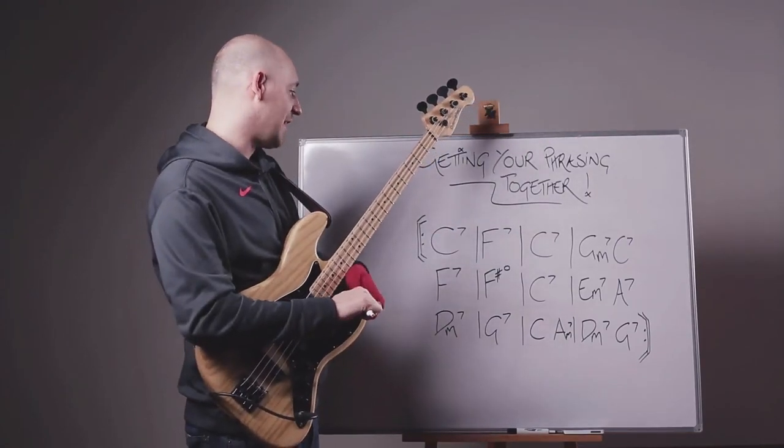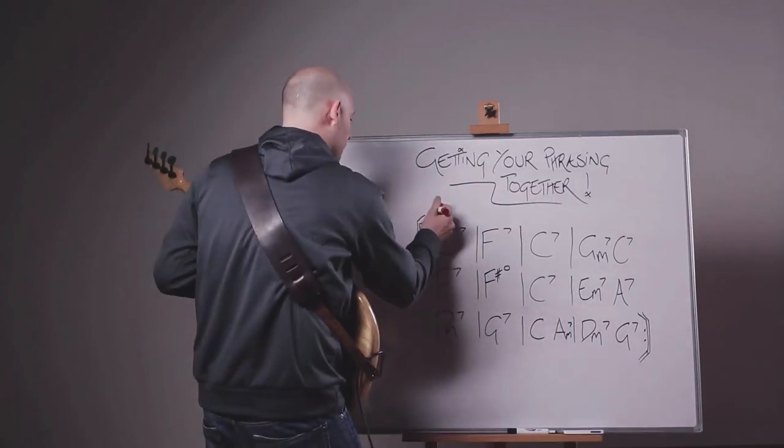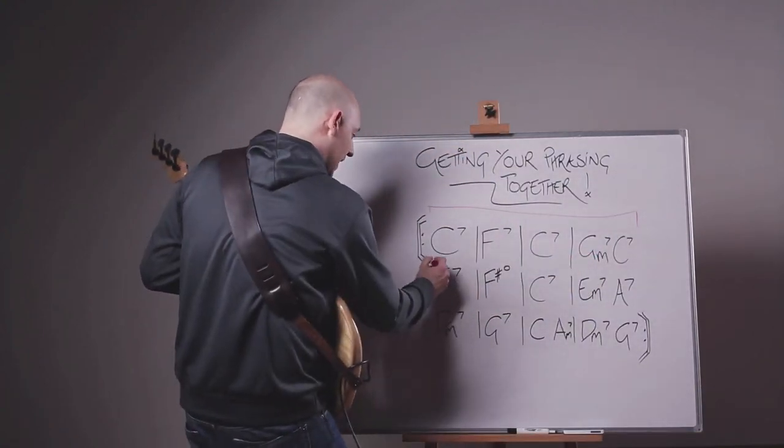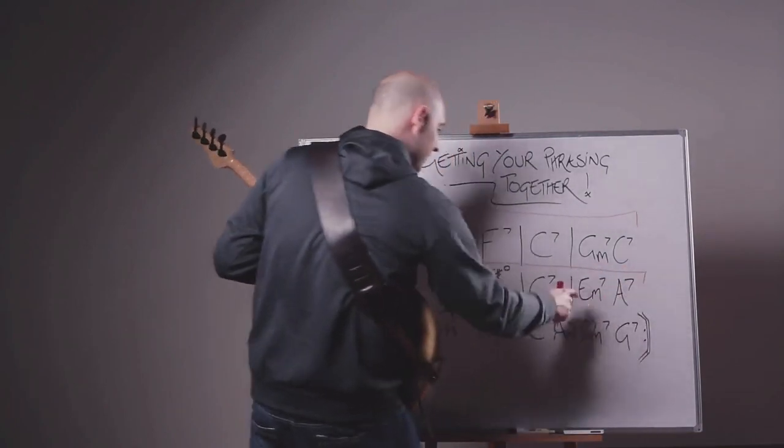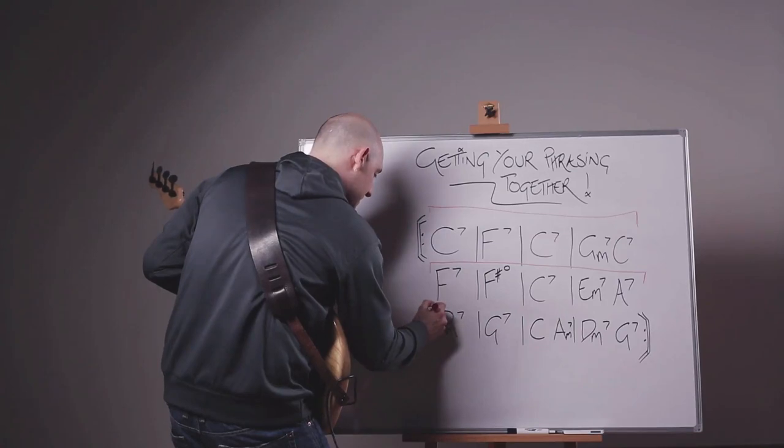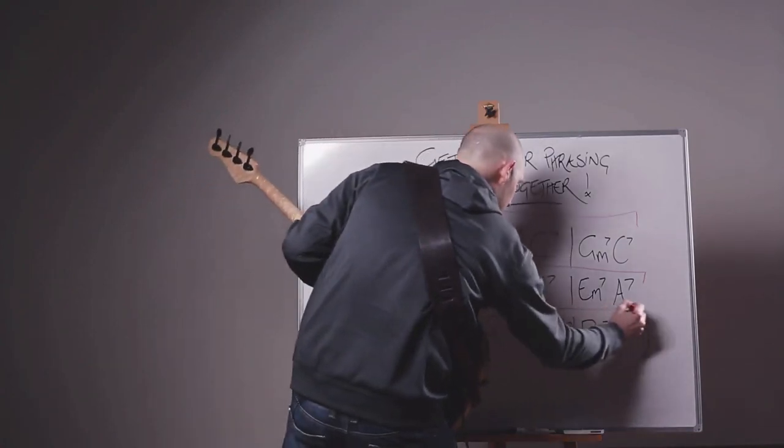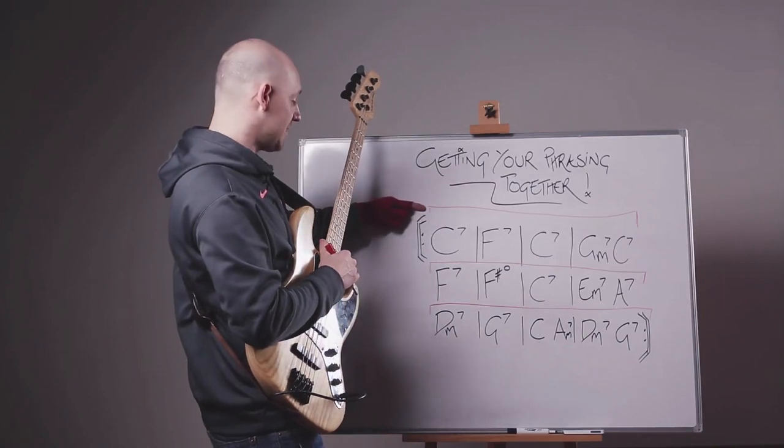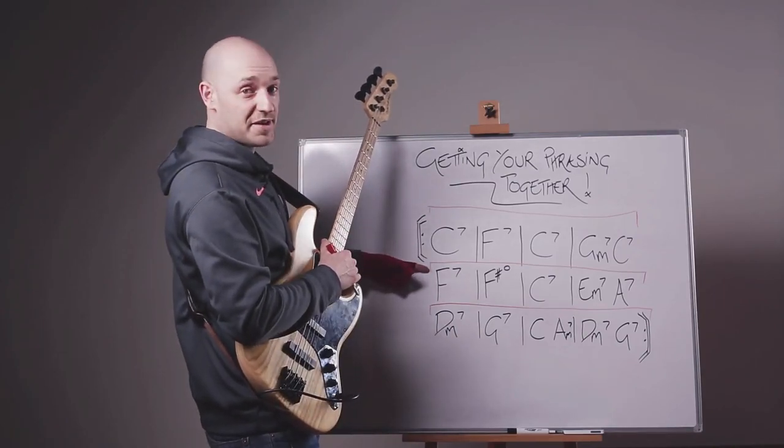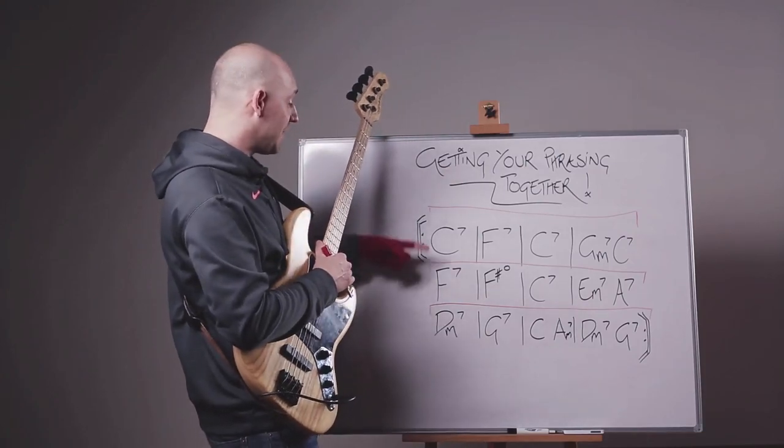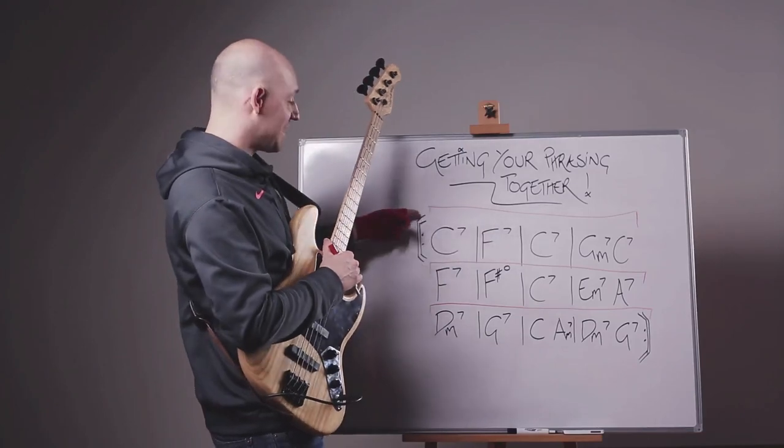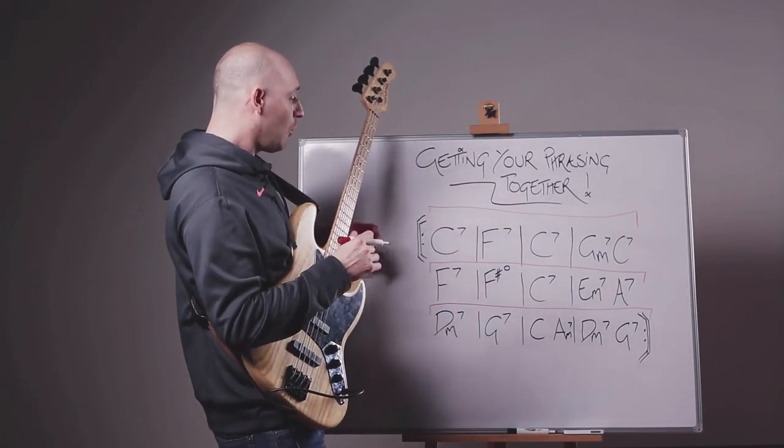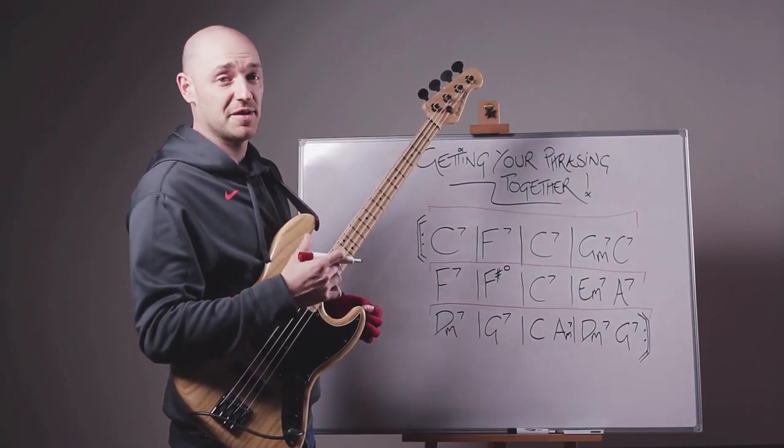So what we're going to do is really simple. To start with, I just want you to play a walking bass line over the first four bars. Then I want you to play a solo over the next four bars. And then over the final four bars, back to a walking bass line. And I want you to do it twice around the sequence. So the first time, you'll be walking for the first four bars, soloing for the second four bars, walking for the third four bars. And then as it repeats to the top, then you'll be soloing on this section, then walking, then soloing. And then I want you to stop.